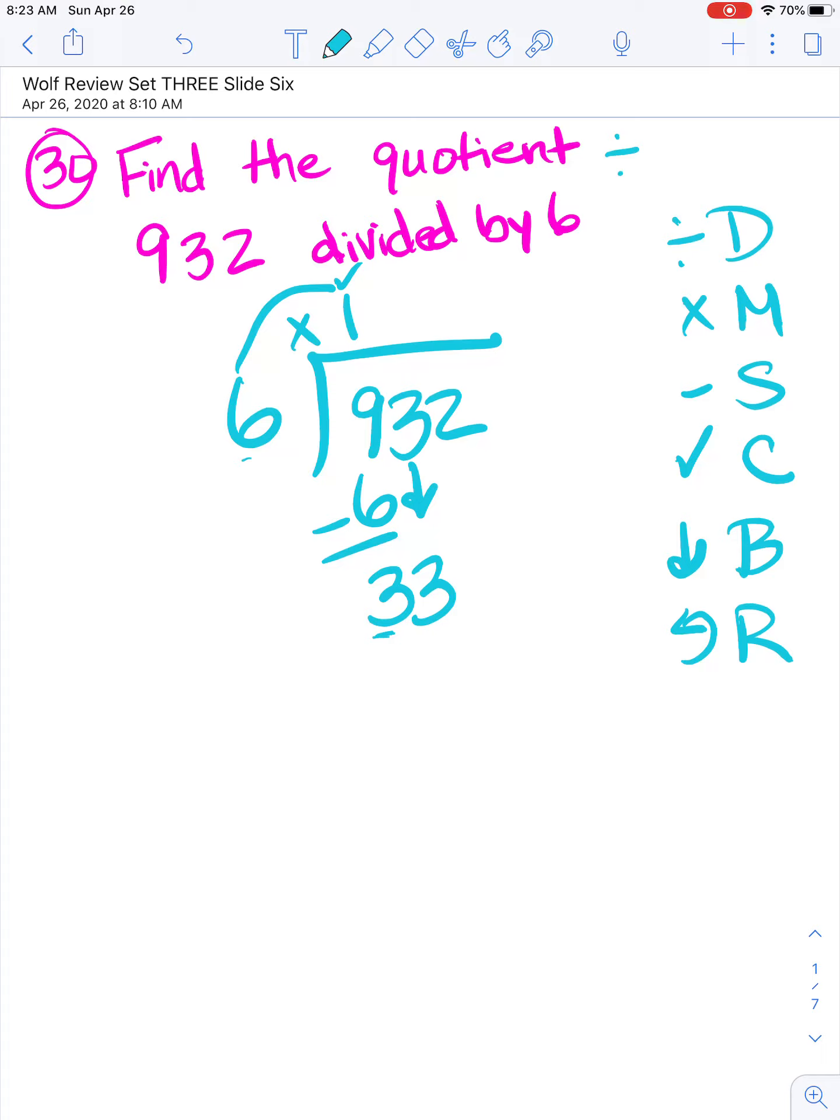If we bring it down, we must repeat. 6 goes into 33 five times. So I'm going to put the 5 above the 3 that we brought down. 6 times 5 is 30. I just multiplied. Now I subtract. I check: 3 again is less than 6. Now I bring it down. If we bring it down, we must repeat.